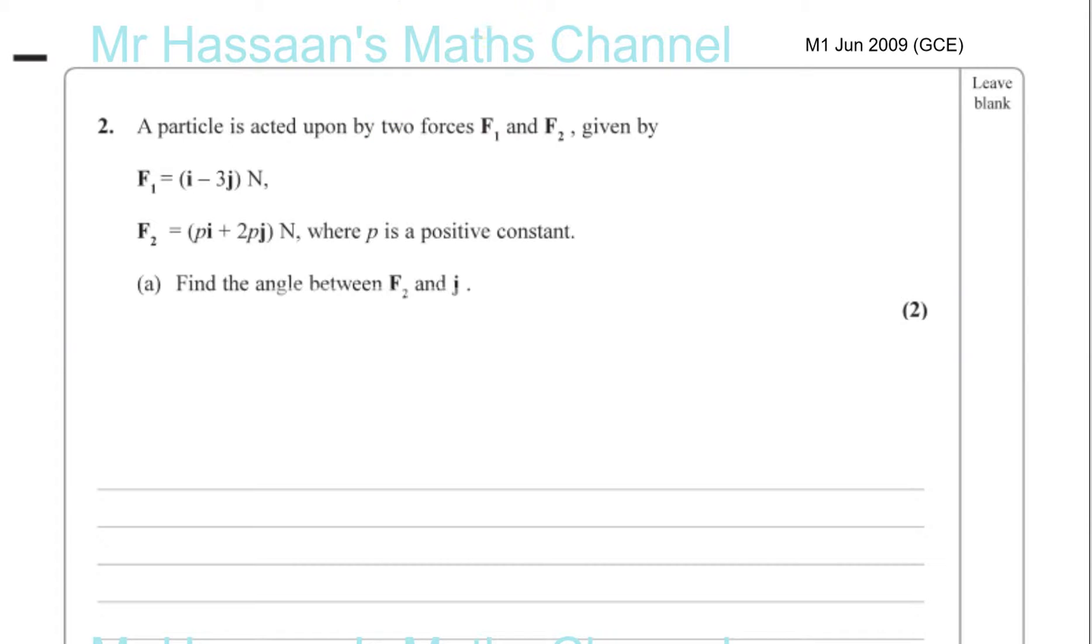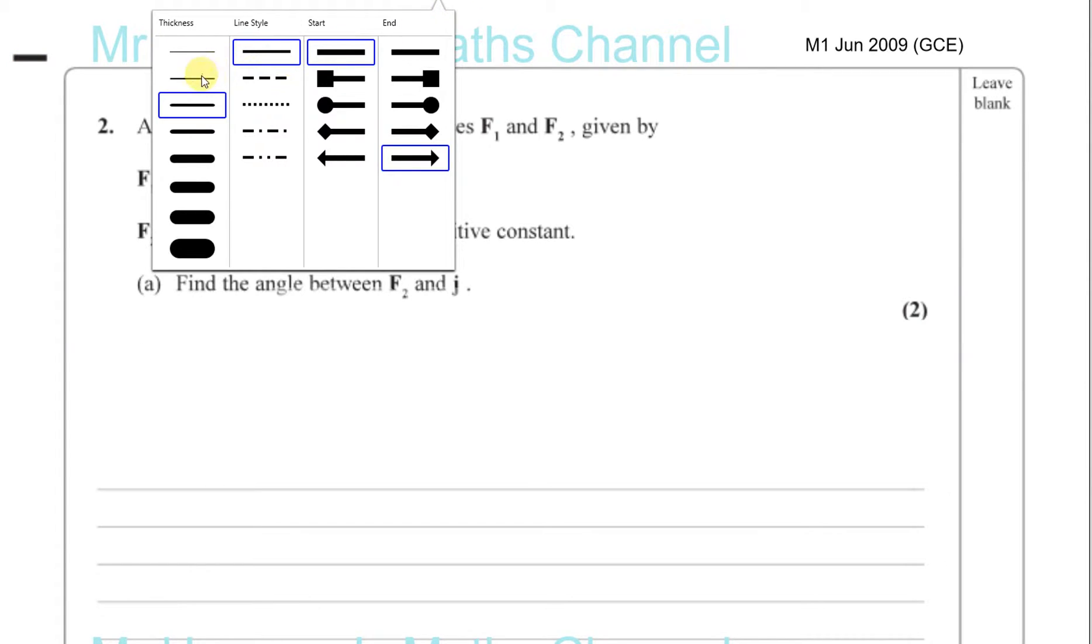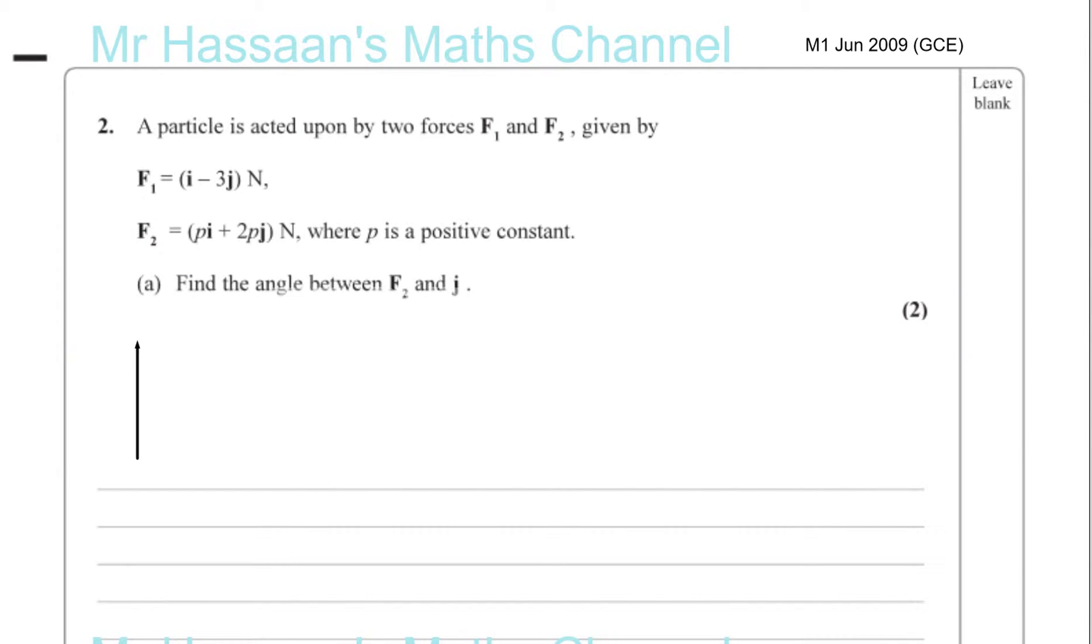So F2 and J. We know that J is a vector that is vertically going upwards, like this. This is J, one unit up there. Now, F2 can be written as PI plus 2PJ. I like to write it in column vector form, so you don't need to write the I and J. So it's like P and 2P in this way, which you can also take out the common factor of P and you're left with 1, 2.